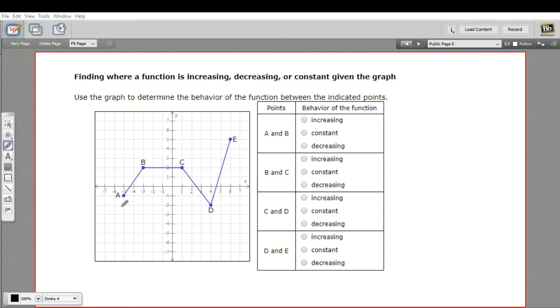In this problem, we are given a function here. This is a graph of a function, and we're being asked to find where it's increasing, where it's decreasing, and where it's constant, according to the graph.